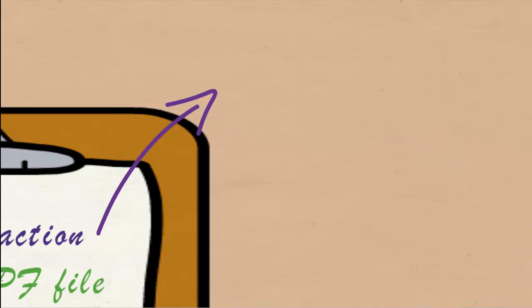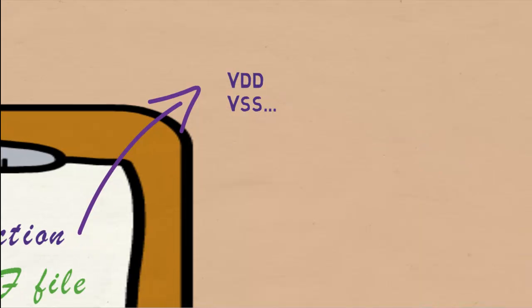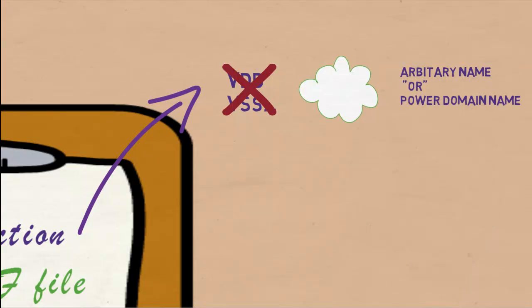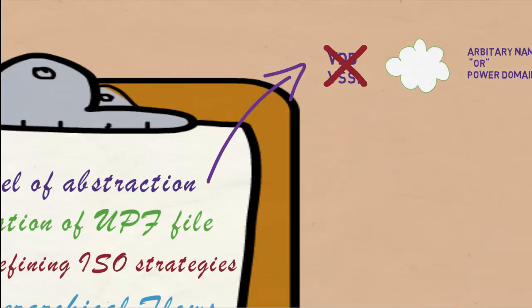Few details now. If you are using supply nets, you need to know their names early in the flow to write the UPF. Whereas supply sets allow you to define supplies at an abstract level using arbitrary names or power domain names.